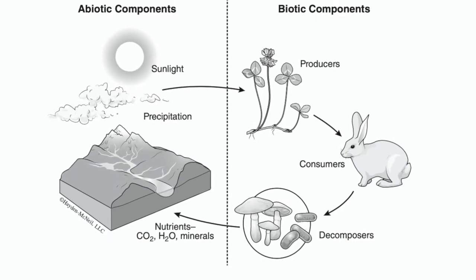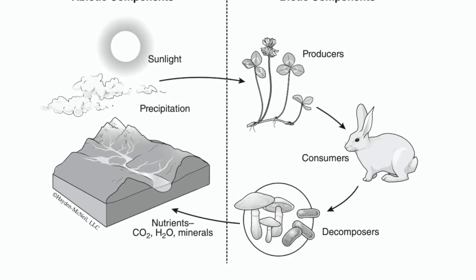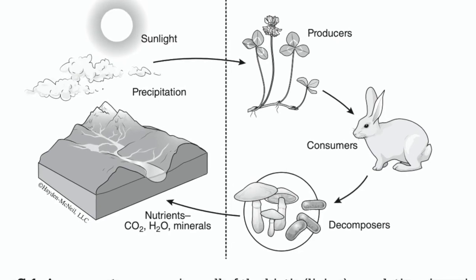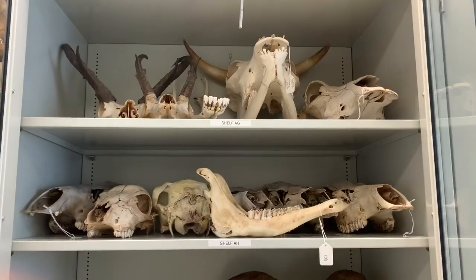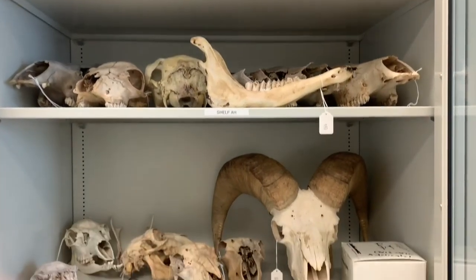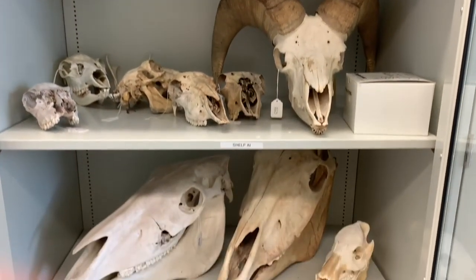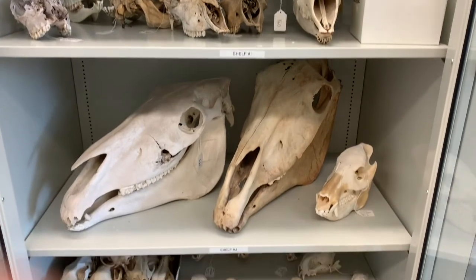We know that animals are affected by abiotic factors like temperature and precipitation, just like plants are. Today we're going to show you some images of those animals in nature, but oftentimes this kind of footage is really hard to capture. So we're also going to take you on a tour of some of the collection areas back at CMU in the biology department to show you some preserved specimens, specimens in jars, maybe some bones and things like that.